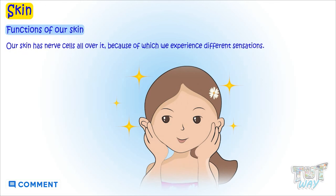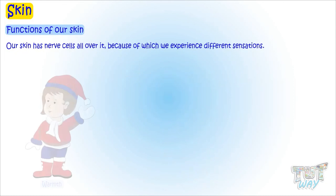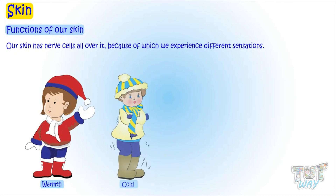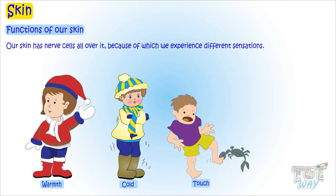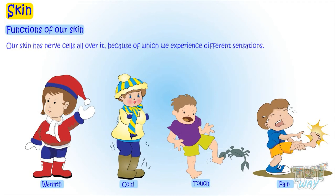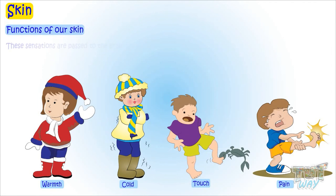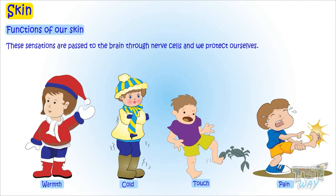Our skin has nerve cells all over it, because of which we experience different sensations like warmth, cold, touch, and pain. These sensations are passed to the brain through nerve cells, and we keep ourselves protected.